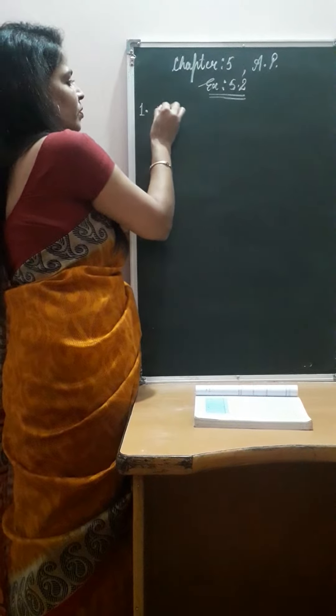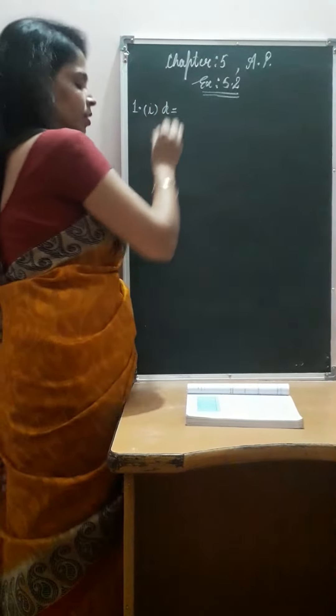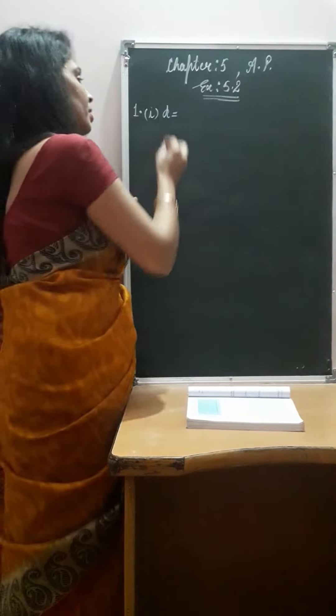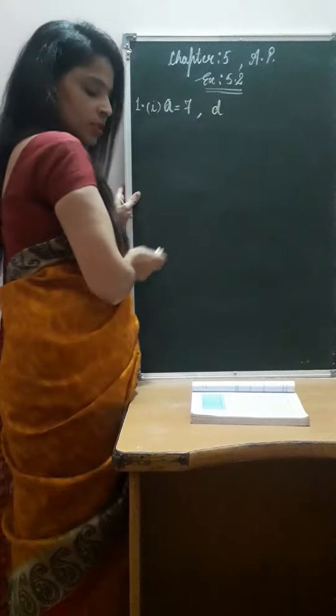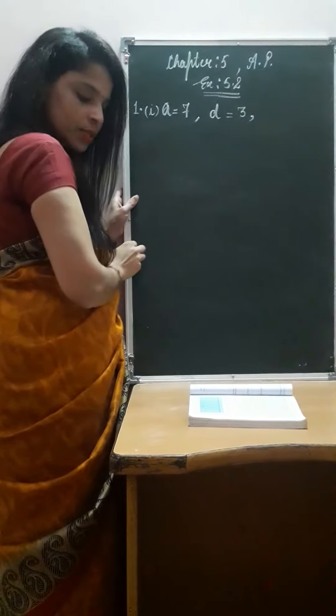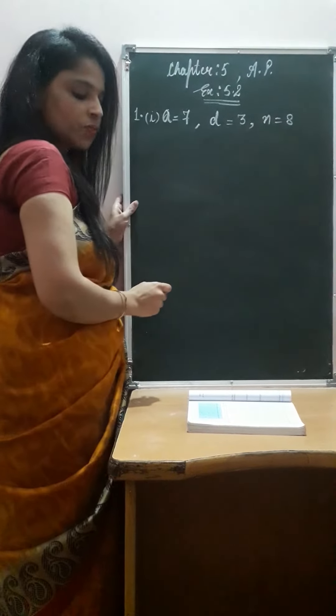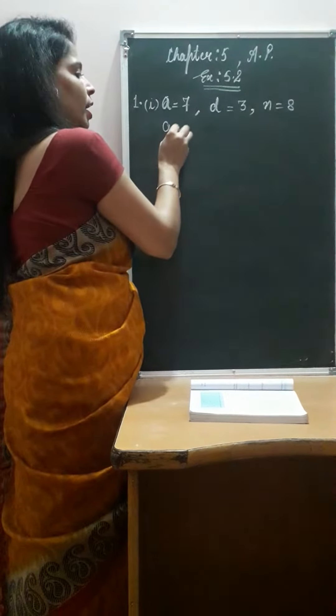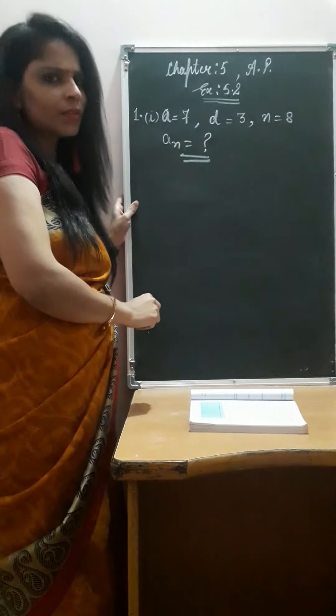The first term, we have given the value of... sorry, we have given A, that is 7. If D is 3 and N is also given to us, we have to find out AN. Clear?